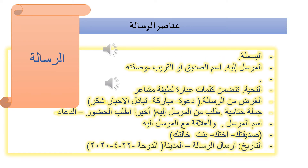نتعرف على عناصر الرسالة الشخصية. نبدأ دائماً بالبسملة، ثم اسم المرسل إليه بمعنى لمن أريد أن أرسلها: لصديق، لقريب، لأخ، لأب. وتذكرين صفته: أخي العزيز، أختي العزيزة، صديقتي الغالية، وهكذا. هذا ما يقصد به الصفة مع الاسم: صديقتي هبة، أختي العزيزة مريم، وهكذا تكون الاسم مع الصفة.